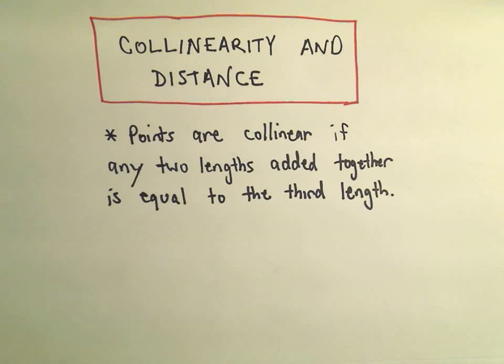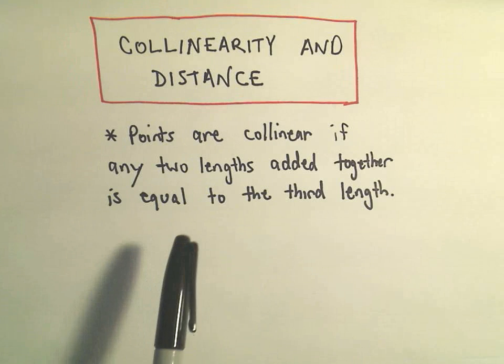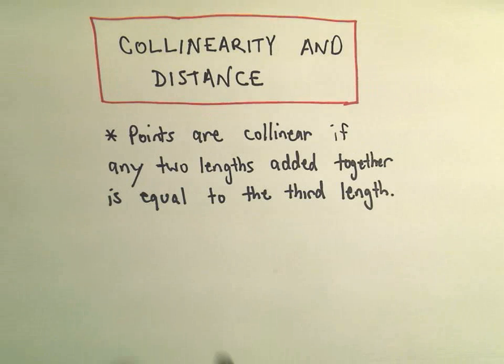In this video I'm going to do another example about collinearity and distance. The idea is if you know two of the distances between three points, you can conclude that all three points are collinear if you find the remaining distance and if the two smaller distances add up to the large distance.